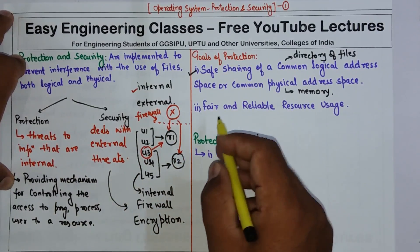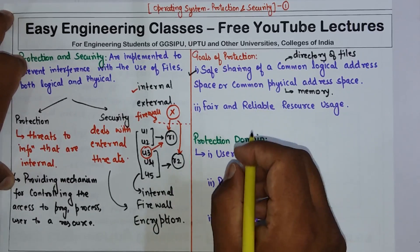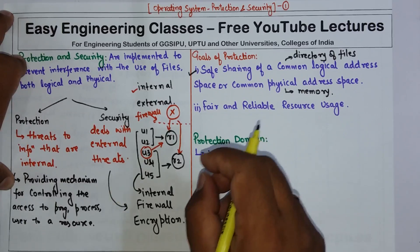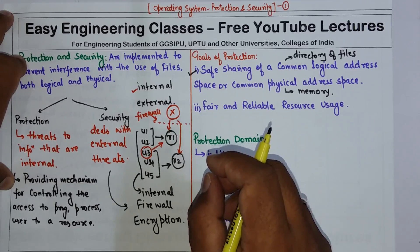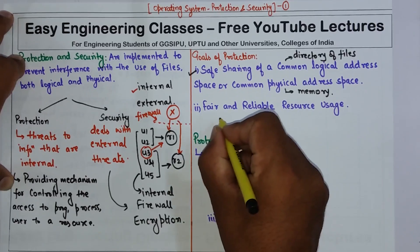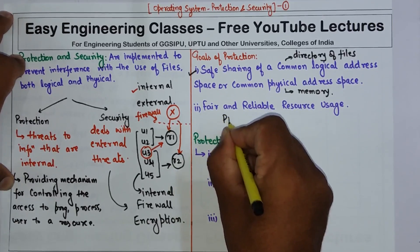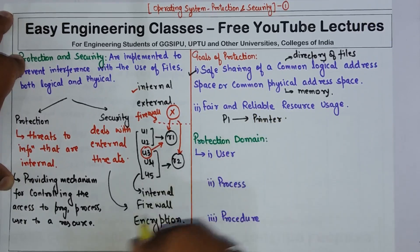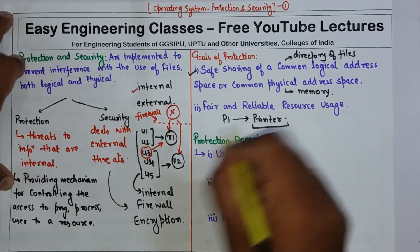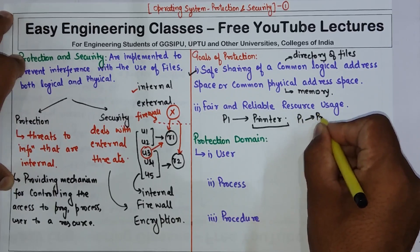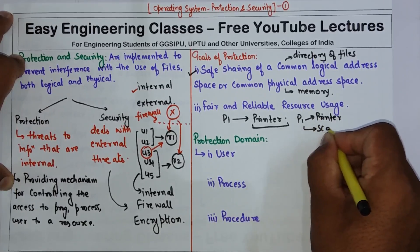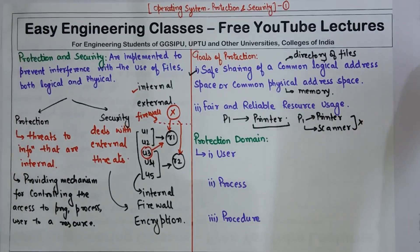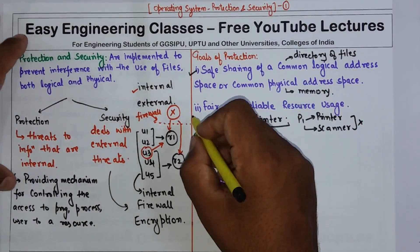The next goal of protection is fair and reliable resource usage. This means that a program in a system can use a resource only in accordance with the policies stated for that particular process. For example, suppose there is a process P1 and P1 has been granted permission to use only the printer. So P1 should use only the printer at a time — it should not be using the printer, scanner, and other things simultaneously, as that would be unfair. A resource should be fairly and reliably used with the help of the protection mechanism.